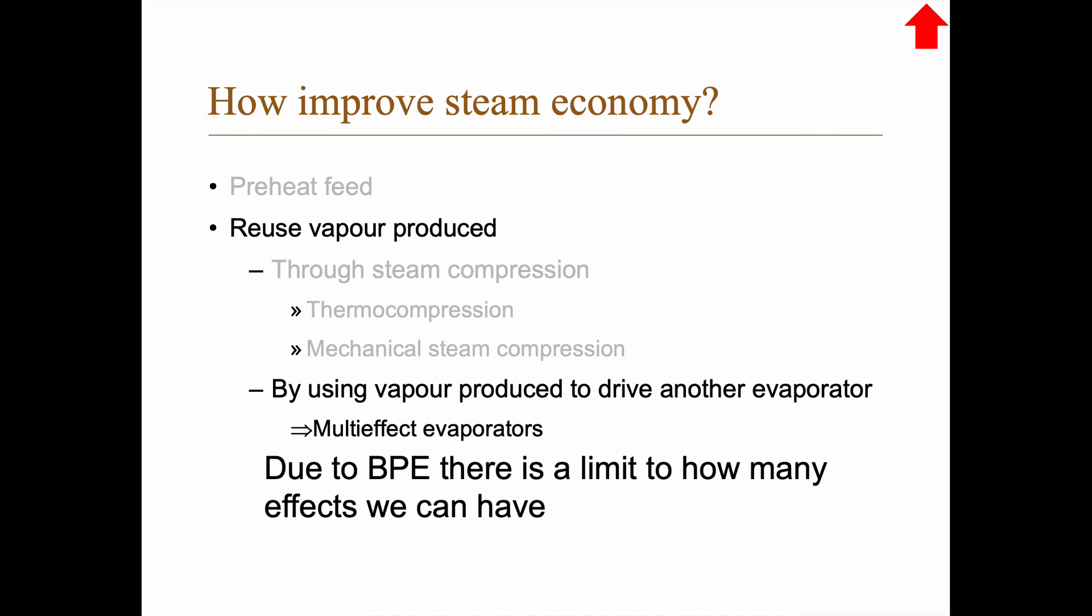But it depends on what you're going to use the final concentrated liquid to. In pulp mills, in black liquor evaporation, you often use the concentrated liquid in a burner. So you burn the liquid and then you want to reduce as much water as possible. So there it might be good to even have eight or nine evaporators. But there is always a limit. And each additional will cost you more. And you don't get out as much improvement for the additional ones at the end.